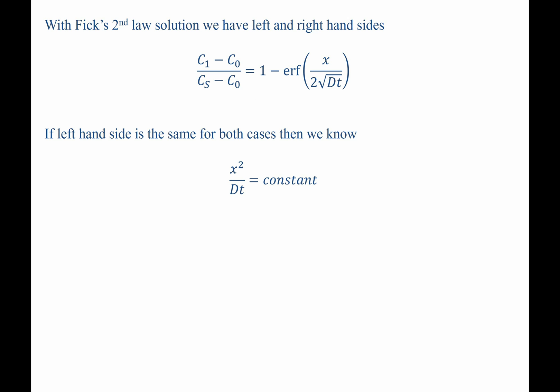We know that the left-hand side is the same for both cases. If this is the same, then this must also be the same. Therefore, X squared over DT must be a constant.